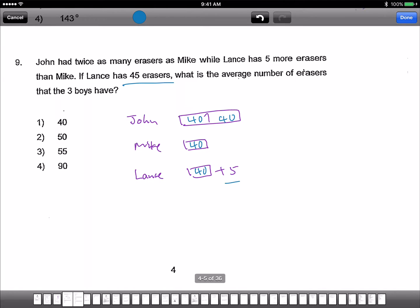So what's the average number of erasers that the 3 boys have? All together, what is the total number of erasers? Here we get 80, 40, 45. Add them together, 120 plus 45, 165. So since we want to find the average, we take 165 divided by 3 equals to 55. The answer is 3.